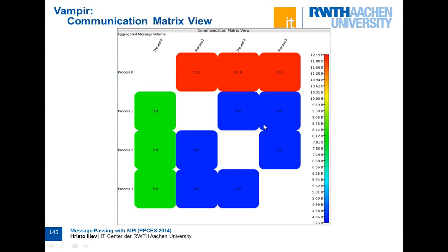There is also a message matrix showing sender versus receiver, indicating how much information has been sent between processes. For example, process one communicates with process zero, but no process communicates with itself — the diagonal is empty. The color-coded legend shows, for example, that process zero sent a total of 12 bytes of data to process one, regardless of how many messages. You can switch the metric to number of messages, aggregate message size, speed, and so on.